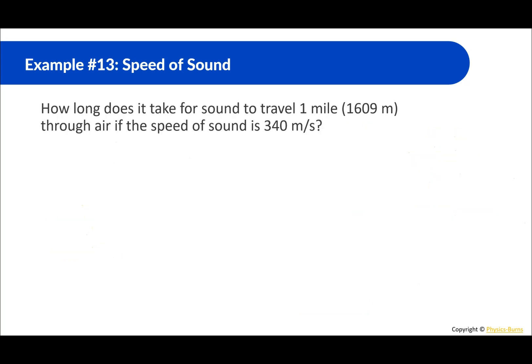How long does it take for sound to travel one mile, 1609 meters, through air if the speed of sound is 340 meters per second? Speed equals distance divided by time. This time we're looking for time. So time equals distance divided by speed. One mile or 1609 meters divided by the speed 340 meters per second gives us 4.73 seconds. So pretty fast, faster than a human, that's for sure.